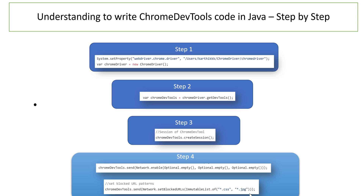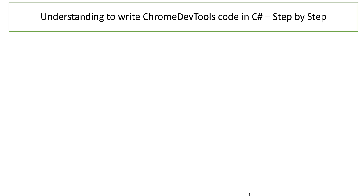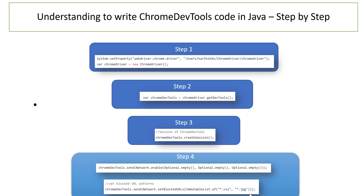In C#, the steps are pretty much the same as Java with a few differences. There is no getDevTools method; instead there is an iDevTools interface — that's the major change. Method names are slightly different, but the overall sequence is exactly the same, aligned so you can remember how the code has to be written.